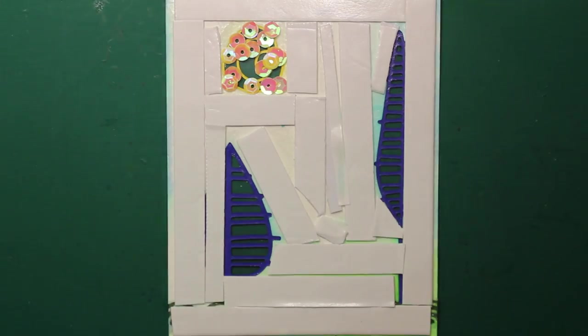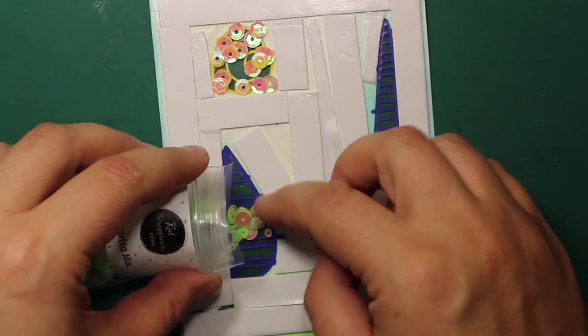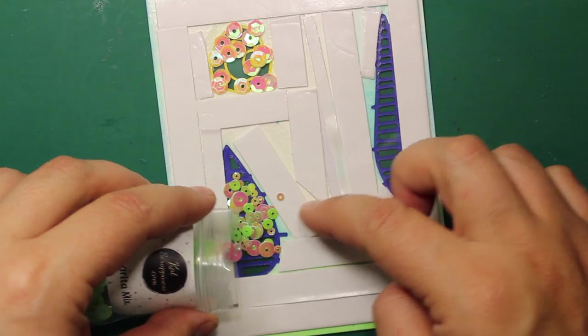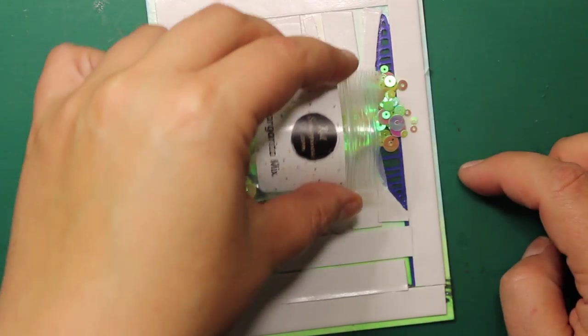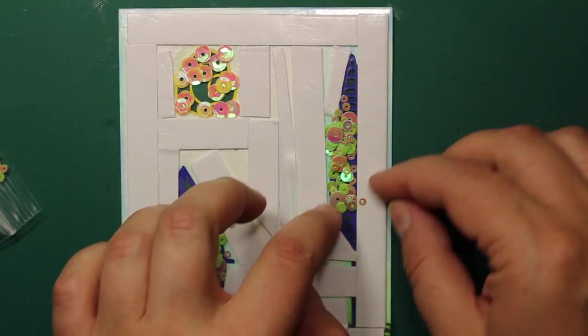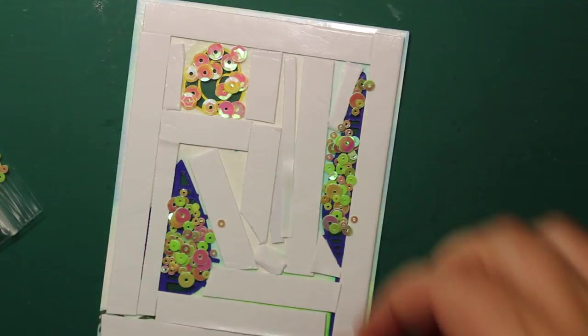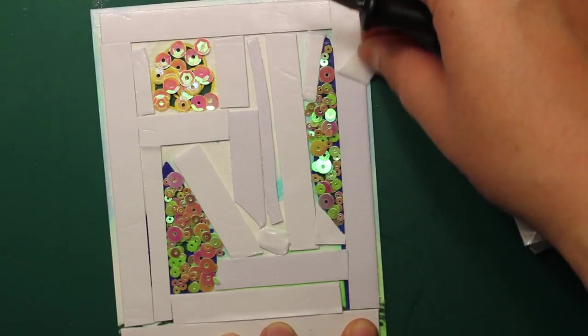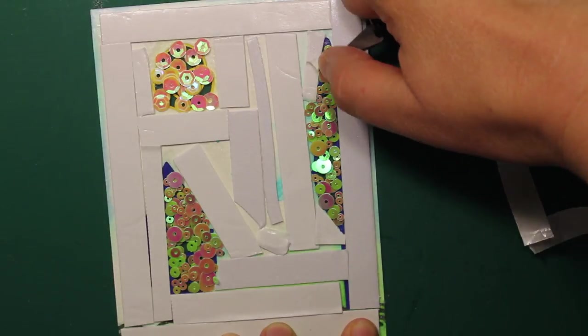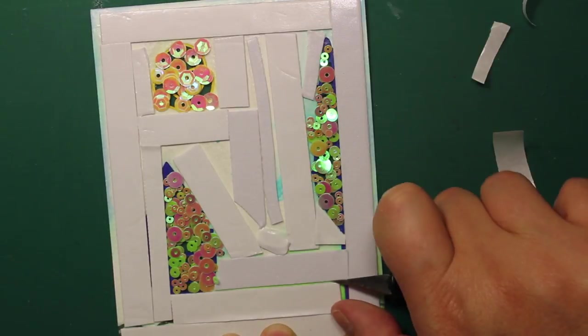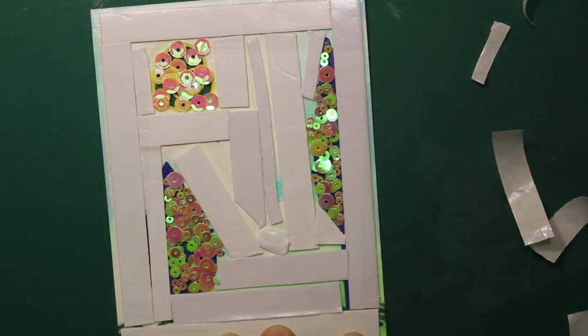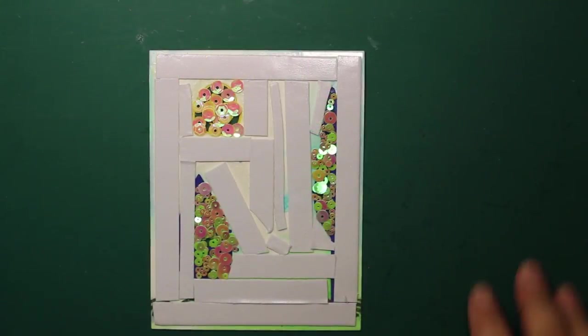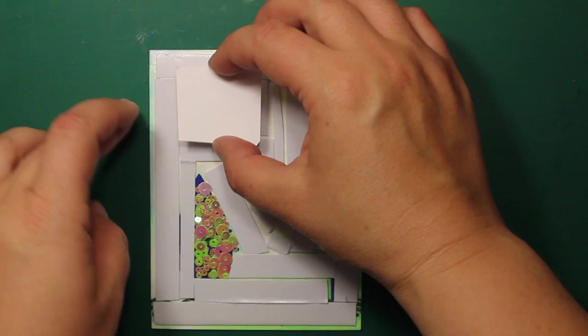Both sequin mixes are by Cat Scrappiness, they are called Buttercup and Margarita Mix. I'm carefully peeling off the protective paper and then I'm going to cover up the shaker windows with pieces of cardstock. I'll be using the white one for the sun and the green ones for the trees.